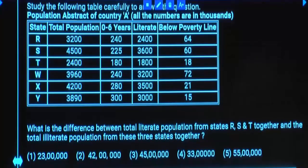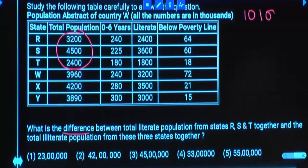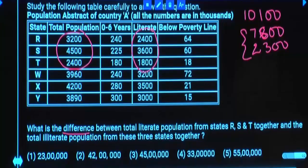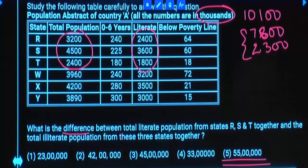What is the difference between total literate population from states R, S, T together and total illiterate population from these three states? You already know total population from the previous question: 10,100. Literates: 2,400 plus 3,600 = 6,000, plus 1,800 = 7,800. Out of 10,100, if 7,800 are literates, then illiterates are 2,300. You are asked about the difference between these two numbers — 5,500. You don't need to calculate how many zeros you have; just the face value is important. 55 should be there. Population is given in thousands — do we really need to worry about the number of zeros? Face value is important: 55 should be there.